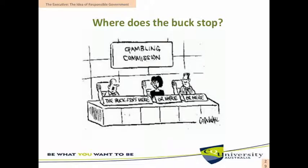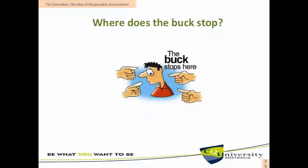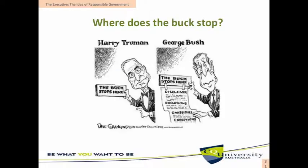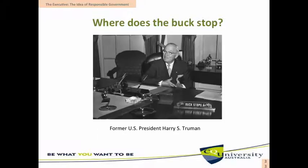A video clip is shown in which a character attempts to identify what another creature is. The creature describes itself progressively: 'I'm a duck-bill,' then 'a web-footed,' then 'a duck-billed, web-footed, funny-looking, fast woman, warm-blooded, puddle-jumping, bottom-feeding, burl-digging...' — before finally being identified as a platypus. The clip illustrates the difficulty of pinning down a clear, singular identity or label.